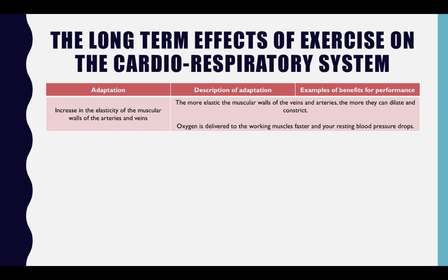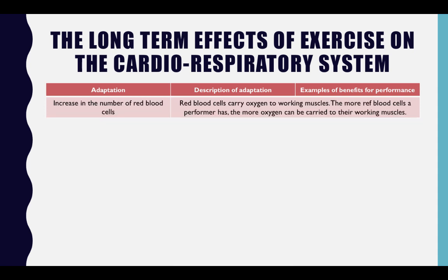Increased elasticity of the muscular walls of the arteries and veins: the more elastic the muscular walls of the veins and arteries, the more they can dilate and constrict. Oxygen is delivered to the working muscles faster and your resting blood pressure drops. An increase in the number of red blood cells also occurs — red blood cells carry oxygen to working muscles, so the more red blood cells a performer has, the more oxygen can be carried to their working muscles.